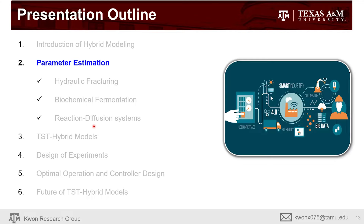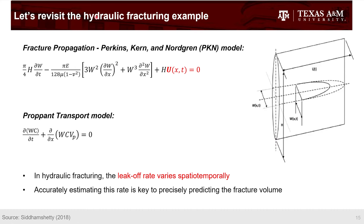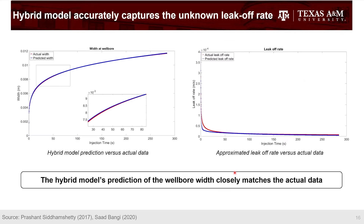With the hybrid modeling approach, I'll talk about how it can be applied to many different systems. The first is parameter estimation, revisiting the fracking example. We want to estimate how the leak-off rate changes spatially and temporally. On the right-hand side, you can see the leak-off rate at particular location positions — it changes with time in a very irregular fashion. Comparing the actual leak-off rate versus the predicted one by the hybrid model, our hybrid model was able to capture this behavior fairly well. When used along with the first-principle model, the fracture width at the wellbore matches the data fairly well.